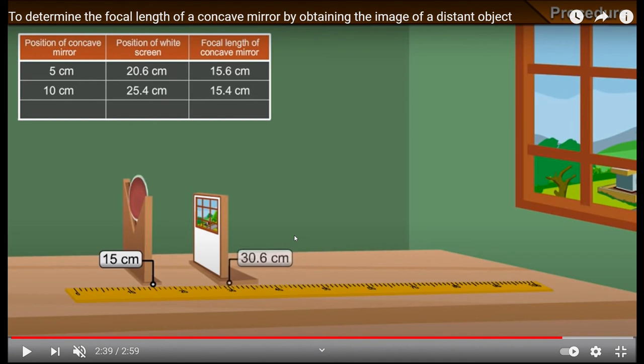So that becomes the correct position of the screen and now again we are to see the distance between the screen and the mirror and in this case it will be 15.6 centimeter: 30.6 minus 15 centimeter, it will be 15.6 centimeters. So in total we have three values now. We have 15.6 centimeter, 15.4 centimeter and another value 15.6 centimeters.